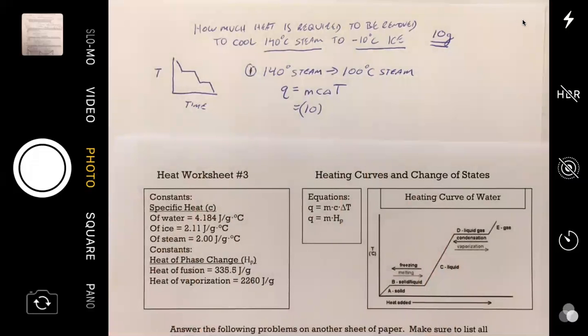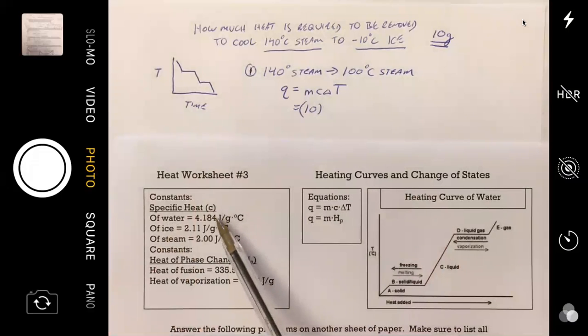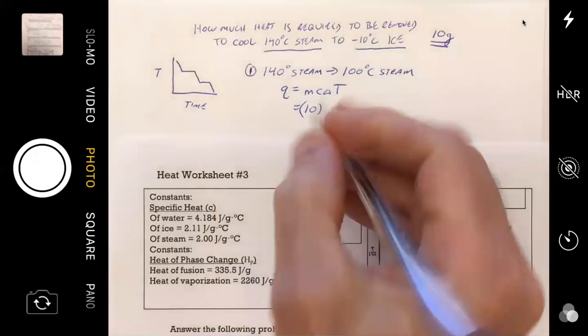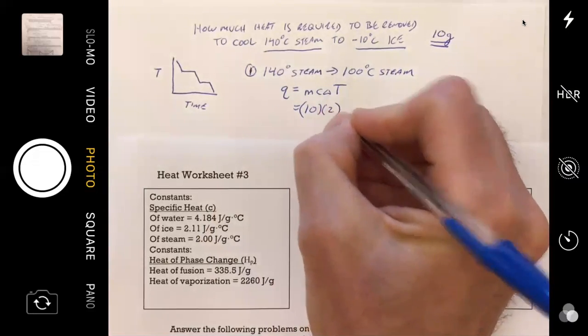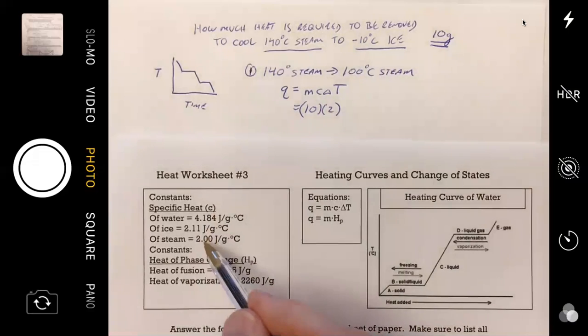Since we're going from 140 degree steam to 100 degree steam, which of these numbers do we choose here? Of steam, the 2.0. That's exactly right. So we're going to go with the 2. And there's just so many places where you can go wrong with these problems, guys. So you have to pick the right value.